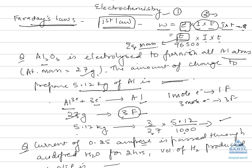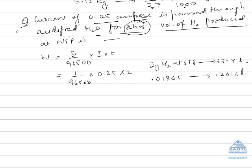Let us take another example. A current of 0.25 ampere is passed through acidified water for two hours. The current is 0.25 amperes and the time is two hours. We need to find the volume of hydrogen produced at NTP.